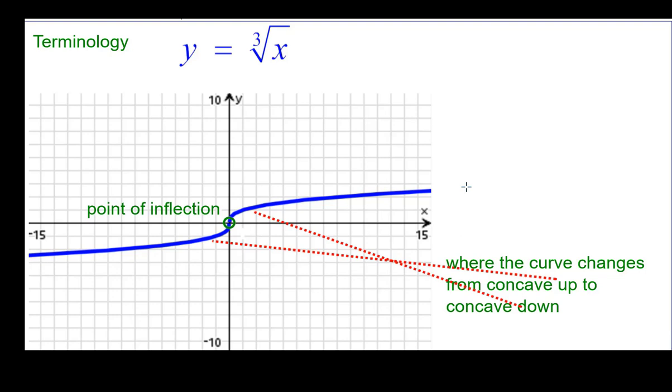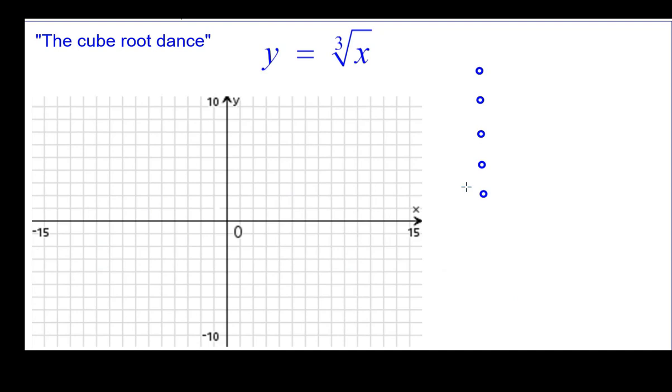Alright, so now we're ready to look at the cube root dance. So we'll go with five points starting with the point of inflection. And then our dance will be right 1 up 1. The cube root of 1 is 1. Right 8 up 2 because the cube root of 8 is 2.